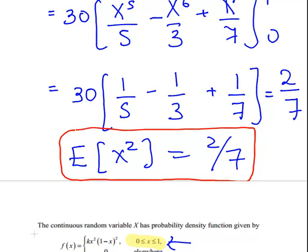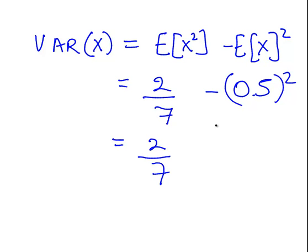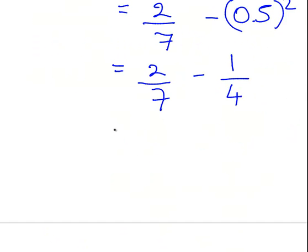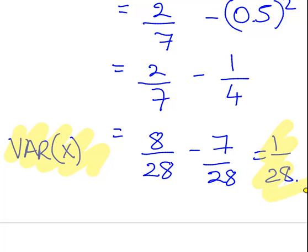The variance of x equals the expected value of x² minus the expected value of x to be squared. That is 2 over 7 minus 0.5 squared, or in other words minus 1 quarter. Working that out, we would have 8 over 28 minus 7 over 28, and that will give us 1 over 28. So the variance of x is 1 over 28. That's our probability theory question. The first part of this is done.